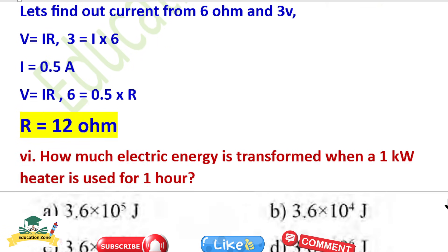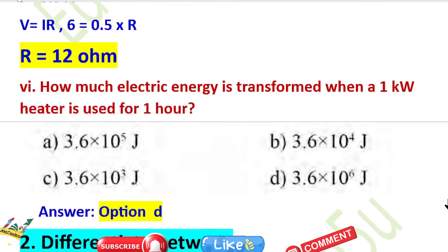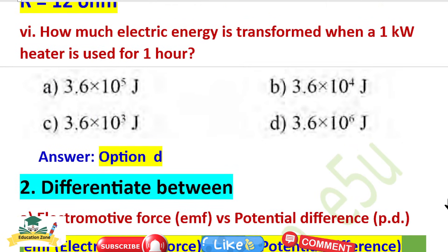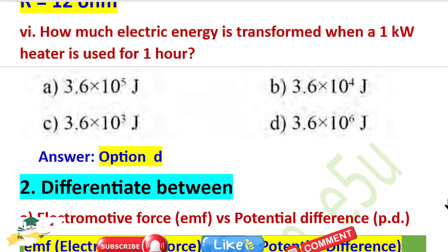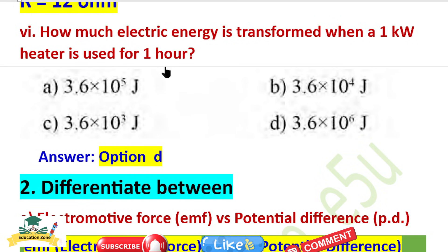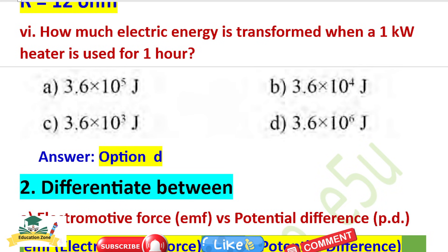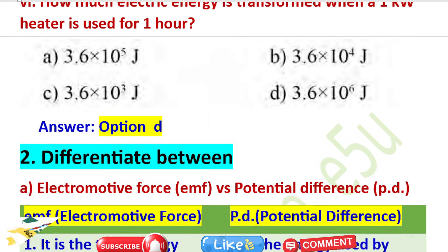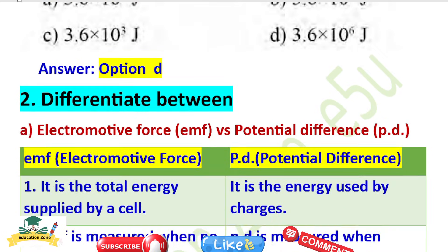Now question: How much electric energy is transformed when a 1 kilowatt heater is used for one hour? The answer is 3.6 × 10⁶ joules.